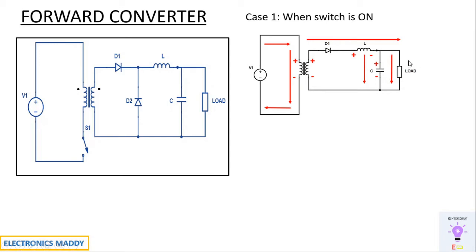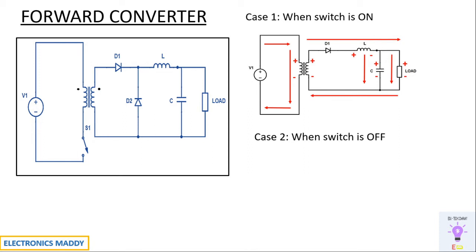The output voltage polarity with respect to the load is plus and minus. This is how power is delivered instantaneously at the load once the switch is on — mutual induction takes place, the diode is forward biased, and the inductor and capacitor start charging. However, power is still received at the load irrespective of the charging of the inductor and capacitor. That is why the forward converter is advantageous compared to the flyback converter.